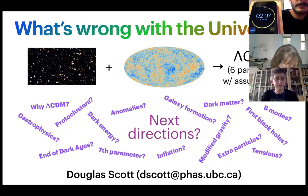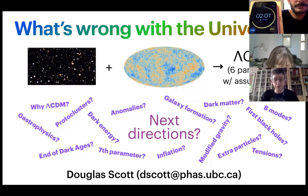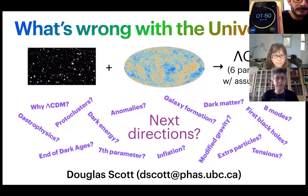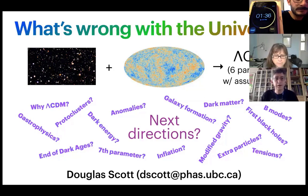So the question is: are we done? Do we have the model that describes the whole universe? Obviously we're not done, so the question really is: what's next? We can ask general 'why' type questions — why are there only six parameters, why do they have the values that they do, what exactly is the nature of the dark matter and the dark energy?